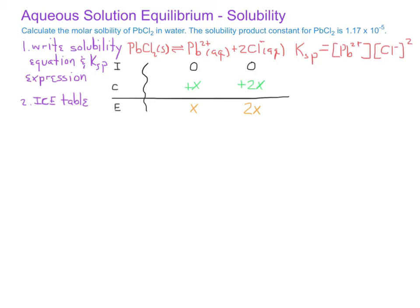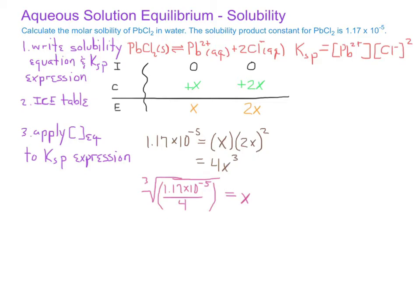We'll now apply these equilibrium values to our Ksp expression. So we get 1.17 times 10 to the negative 5th equals x times the square of 2x. When we take the square of 2x, we get 4x squared, and multiplying by x gives us 4x cubed. We can solve for x by taking the cube root of 1.17 times 10 to the negative 5th divided by 4, and we find that x equals 1.43 times 10 to the negative 2nd molar. Since the lead ion is in a 1 to 1 ratio with lead chloride, this value is also the molar solubility of lead chloride dissolved in water.